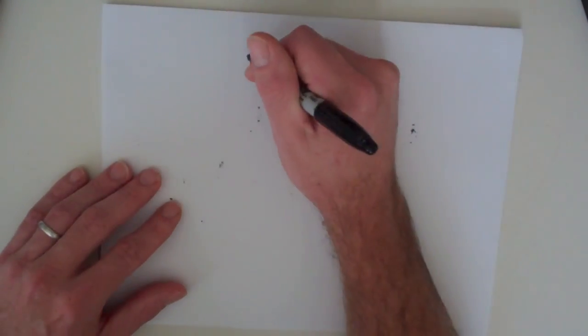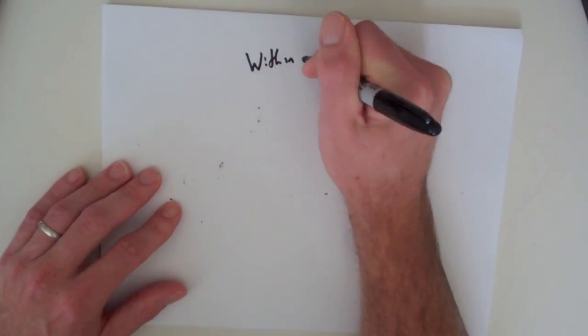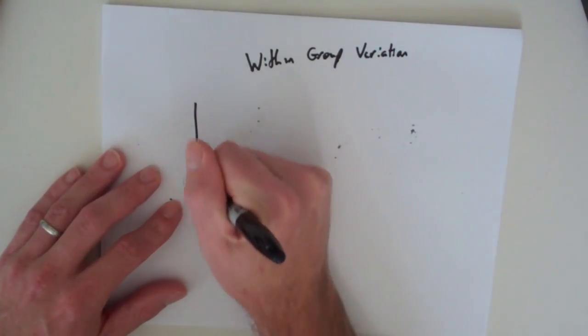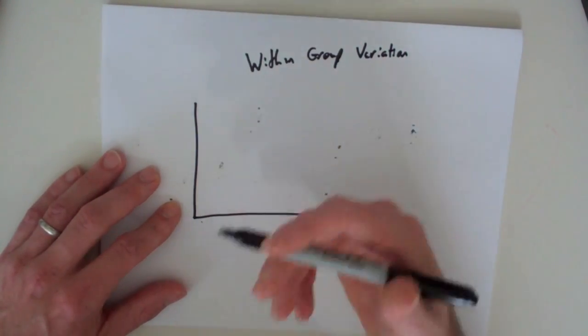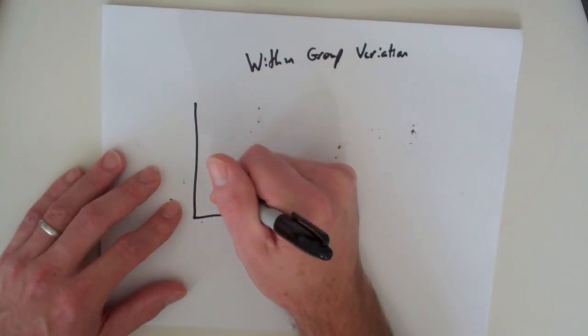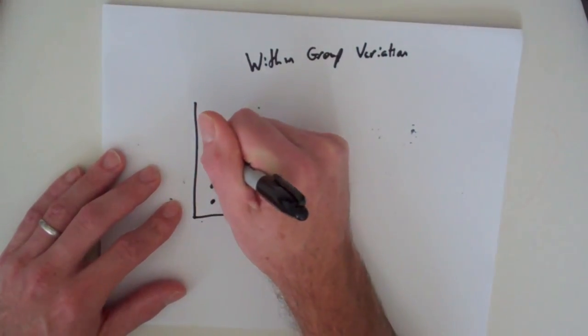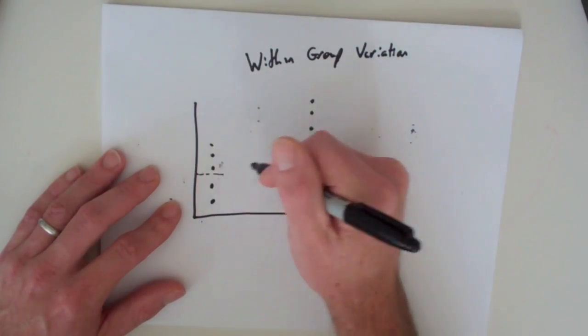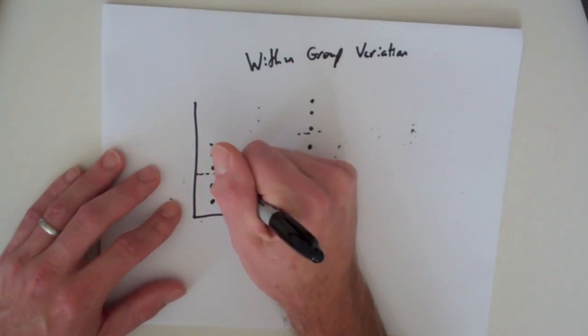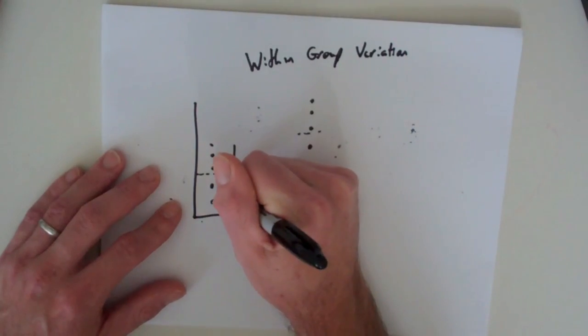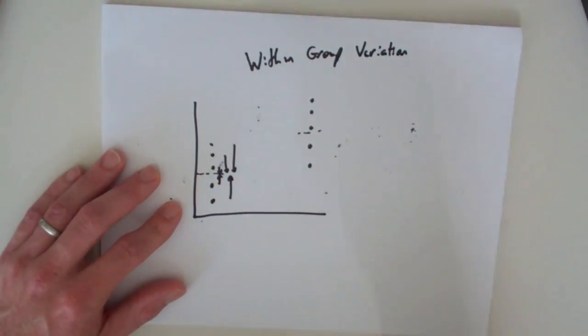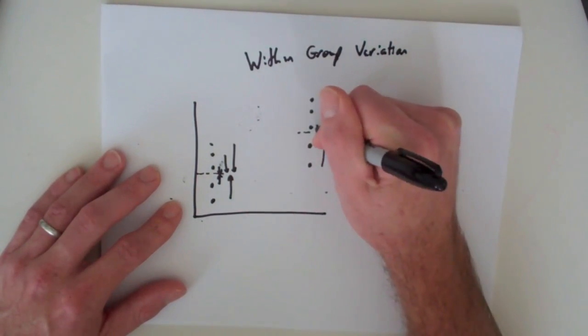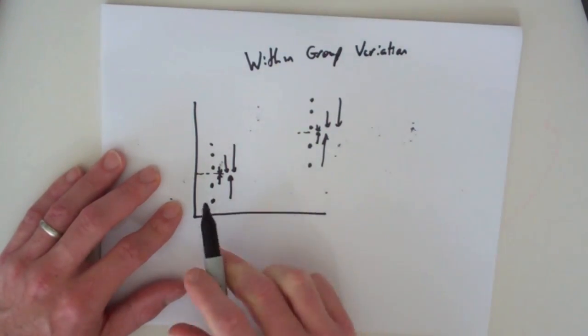The other thing that contributes to F is within group variation. Within group variation is simply the spread of the data within any group. If we have points like this in two different groups, here's the mean for this group, and here's the mean for this group. The within group variation is how far points are from the mean. This is equivalent to when you're calculating variance or standard deviation for any individual distribution.